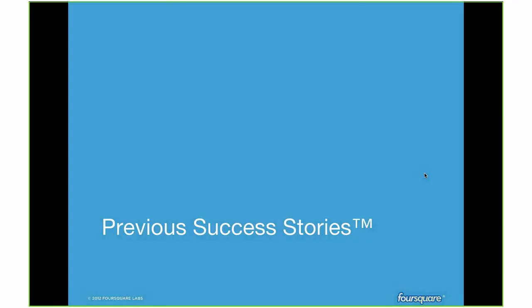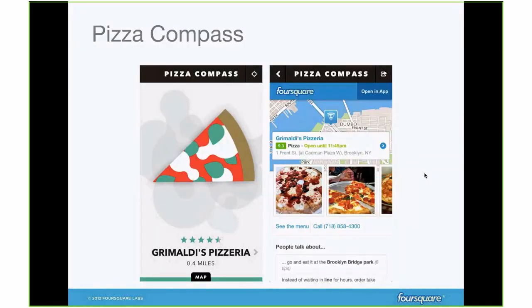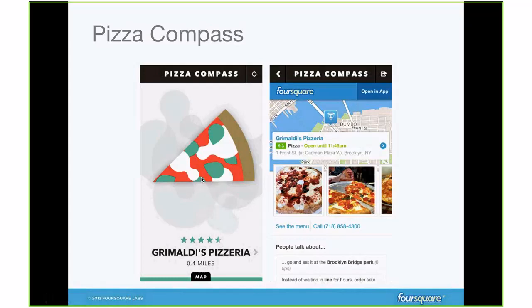Let me go over some previous success stories — the kind of API integrations we've seen out of events like these. There was a cool mobile app called Pizza Compass: this pizza image in the middle rotates as you turn your phone, pointing to the nearest pizza place. When I took the screenshot, there was a pizzeria 0.4 miles away. When you tap through, you see our venue pages with rich information about the venue, its location, hours — open till 11:45, and you can even call them.